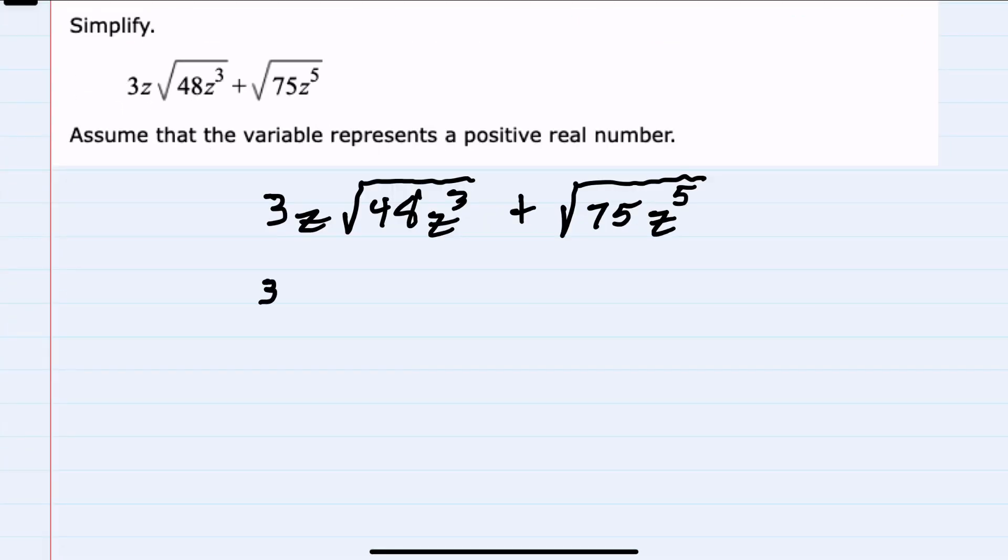To start simplifying, we will look at what's underneath the radicals and see if we can write those as perfect squares, since these are both square roots. In the first example, looking at the 48, we can rewrite the numerical portion as 16 times 3, because 16 is a perfect square. I'll be able to take that out of the radical by taking the square root of 16.